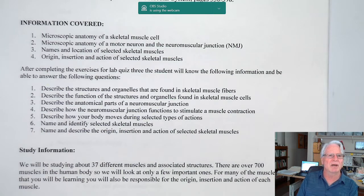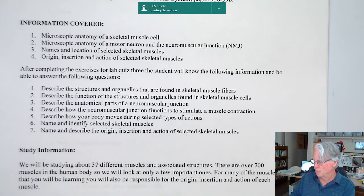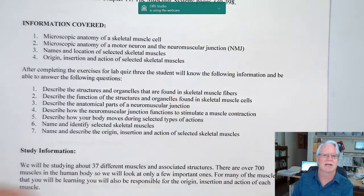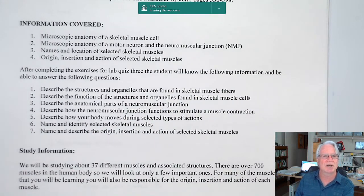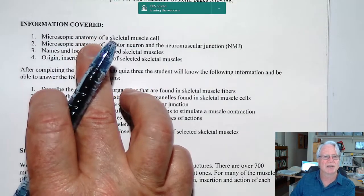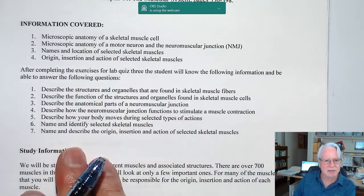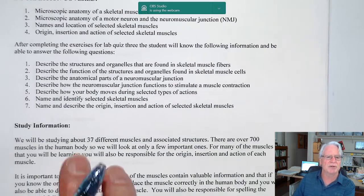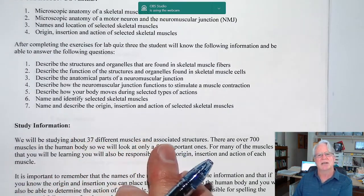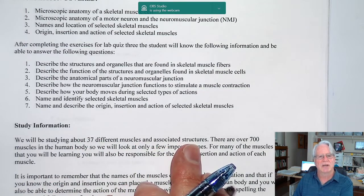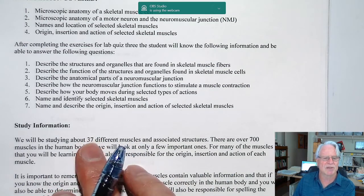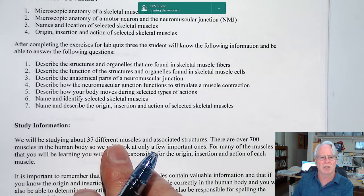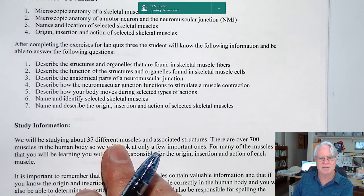Today we're going to look at the microscopic anatomy of a skeletal muscle and the neuromuscular junction — how that's put together. That's the extent of what we're going to do today. In the following series of presentations, we're going to be looking at about 37 different muscles and their associated structures. These 37 muscles represent a very small percentage of the total number of muscles in the human body.